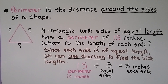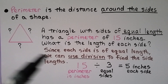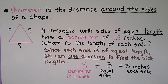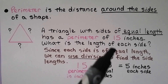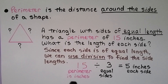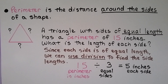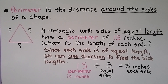Perimeter is the distance around the sides of a shape. Here we have a triangle with sides of equal length that has a perimeter of 15 inches. What is the length of each side? Since each side is of equal length, we can use division to find the side lengths. We divide that 15-inch perimeter by the 3 sides, and we see that it's 5 inches for each side — 5 plus 5 plus 5 equals 15.